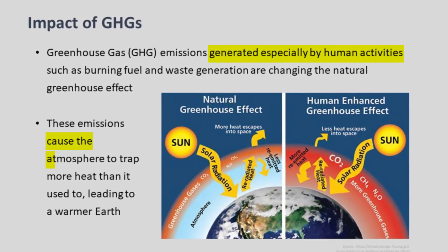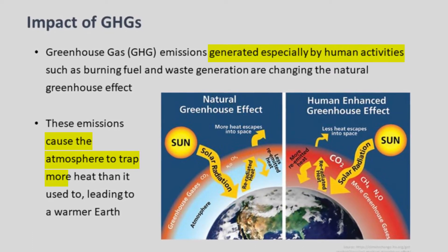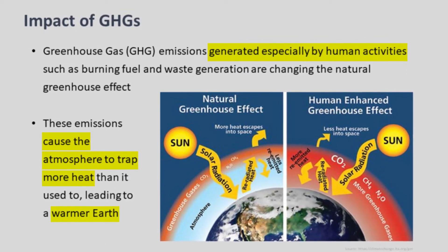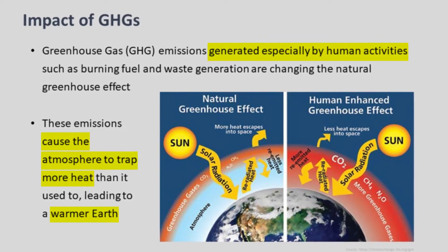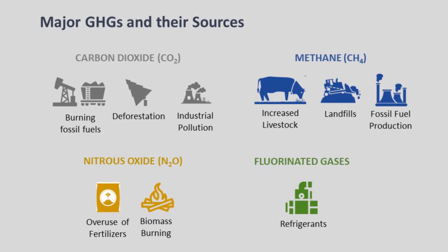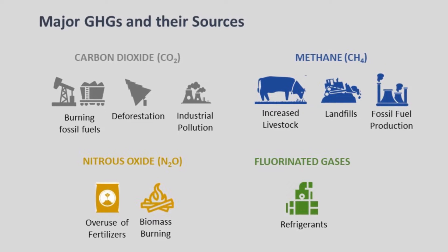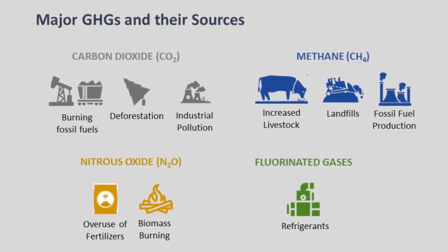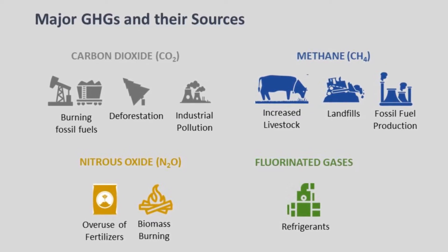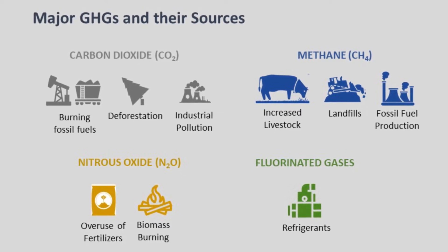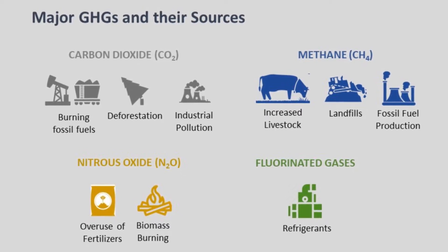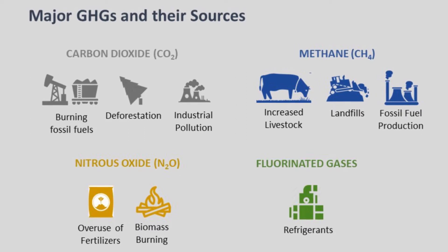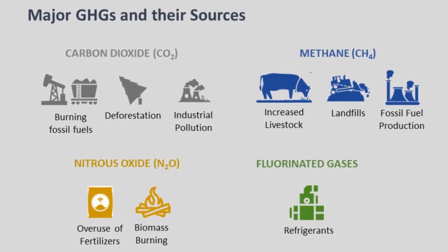These emissions cause the atmosphere to trap more heat than it used to, leading to global warming. Examples of anthropogenic sources of emissions include carbon dioxide from the burning of fossil fuels and deforestation, as well as methane from landfills and waste disposal.